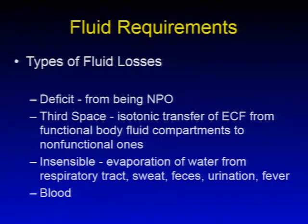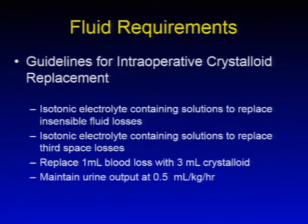Next, we'll talk about types of fluid losses. The first type is deficit, from the patient being NPO overnight. Third space loss is when isotonic transfer of extracellular fluid from functional to non-functional body fluid compartments occurs. Insensible losses include evaporation from the respiratory tract, sweat, feces, urination, and fever. The fourth type is blood loss. Guidelines for intraoperative crystalloid replacement include: using isotonic electrolyte-containing solutions to replace insensible and third space losses, replacing 1 mL of blood loss with 3 mL of crystalloid, and maintaining urine output about 0.5 mL per kilogram per hour.